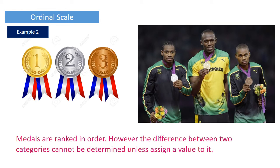Let us take another example of ordinal scale. You can see athletes standing with gold, silver, and bronze medals. The person who got the gold medal is the one who finished first, followed by silver and bronze. The medals are ranked in order. However, the difference between two categories cannot be determined unless we assign a value to it — it just talks about order or ranking, not the difference between categories.